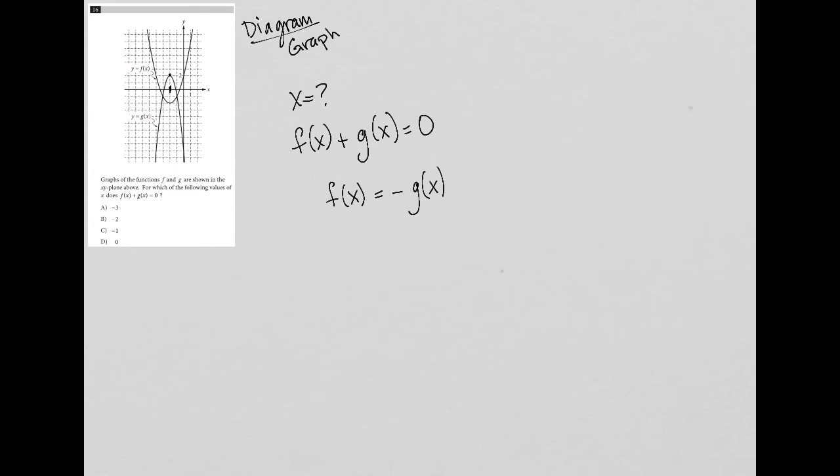y is positive 2. So the g of x would be positive 2. But when x is negative 2, the f of x is negative 2, right? So it looks like I've already found the information.